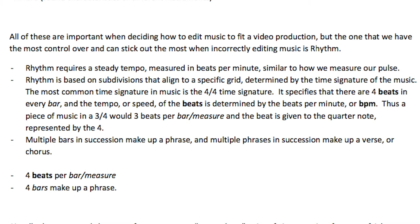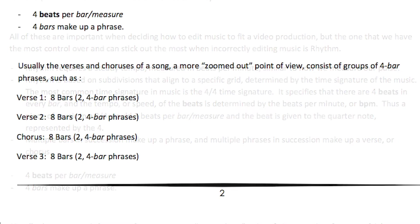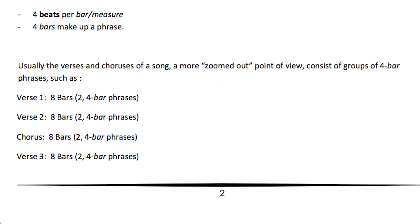A piece of music in 3/4 time would have three beats per bar or measure, and the beat is given by the quarter note — that's the second number in 3/4 or 4/4 time. Multiple bars or measures in succession make up a phrase, and multiple phrases in succession make up a verse, or even a chorus.